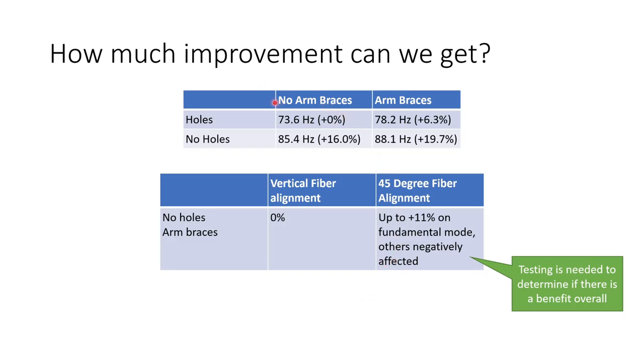But how much improvement does the simulation predict that we can get by making these changes? So if we start with the initial configuration which was holes in the arm with no arm braces we can see that we get a resonant frequency of that mode that we're particularly concerned about at 73.6 hertz. Adding arm braces improves the situation to 78.2 hertz so we get about a 6.3 percent improvement in stiffness which is okay that will definitely help. However if we go back to no arm braces and instead of adding arm braces we remove the holes in the arm we can see we can get a much bigger improvement. We can get a 16 percent uplift in the stiffness of the arm by removing those holes. So it's much more effective than adding the arm braces.